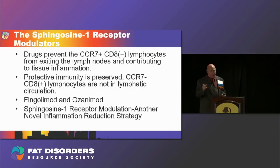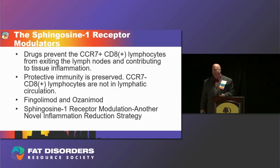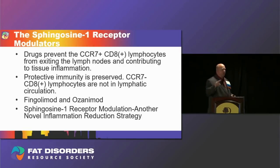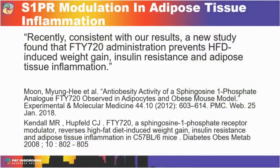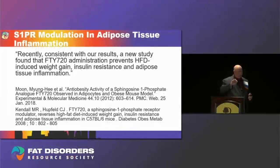Two drugs in this class: fingolimod, a first-in-class sphingosine-1 phosphate receptor modulator, and ozanimod. This represents the second novel inflammation-reduction strategy that could be applied to inflammatory subcutaneous adipose tissue. Fingolimod was studied in adipose tissue — in preclinical development it was designated FTY720 — and was found to inhibit and reduce inflammation in adipose tissue, with its mechanism of action being the reduction of both lymphocytes and macrophages in adipose tissue.